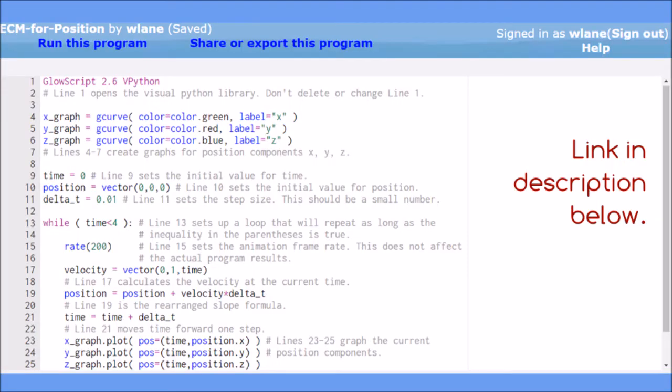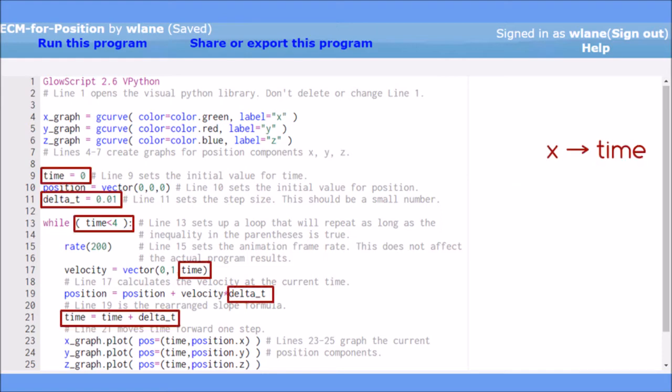In the description below is a link to this code that you can copy, modify, and run to apply the Euler-Cromer method to position and velocity. This code is nearly identical to our previous code, with just a few changes.